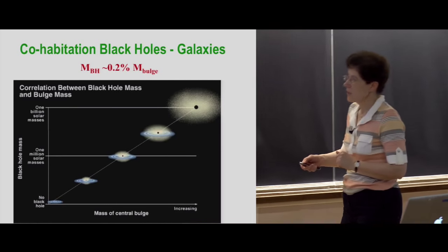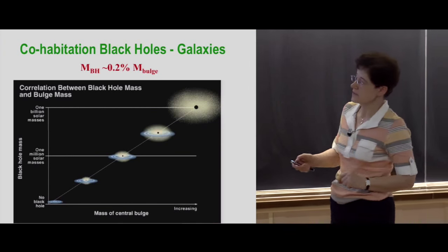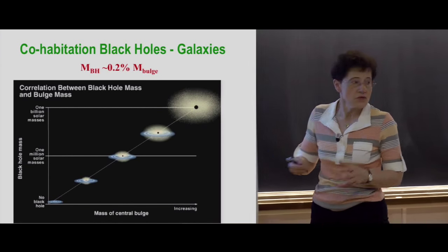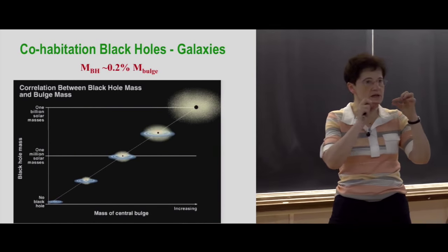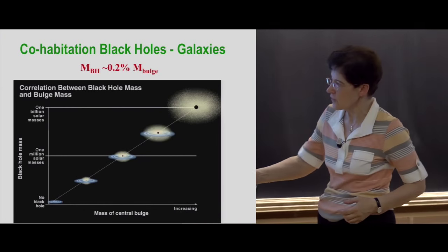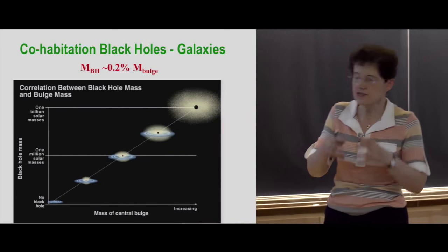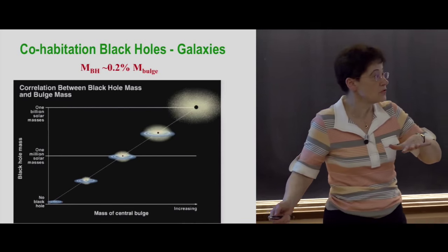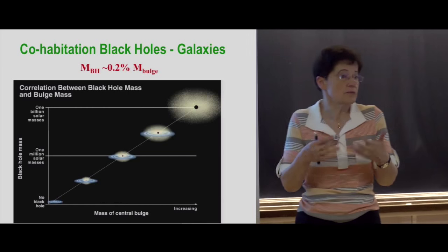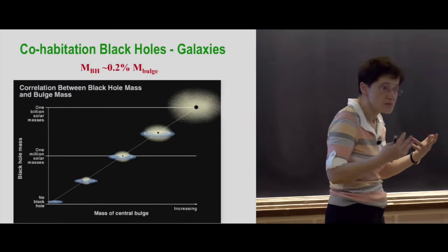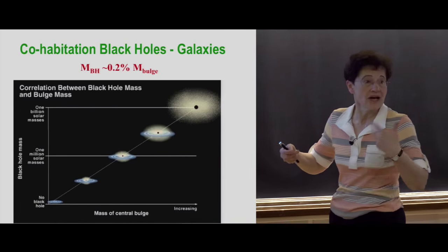For supermassive black holes, we know there is a very good relation between the mass of the central black hole and the mass of the bulge of the galaxy. Spiral galaxies have a disk where stars form, and a central bulge of old stars. What is proportional to the mass of the black hole is the bulge. If you have a galaxy without a bulge, you have no black hole. In our own galaxy, the Milky Way, we have a very small bulge, so a black hole of 4×10⁶ solar masses. In some elliptical galaxies with a big bulge, you have 10⁹ solar mass black holes.